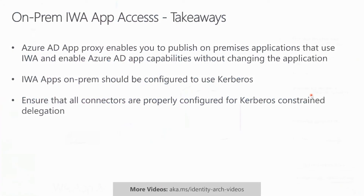So what are the key takeaways from this video? First, Azure AD App Proxy enables you to publish on-premises applications that use integrated Windows authentication and enable Azure AD capabilities such as MFA, My Apps Portal, and sign-in reports — all without changing any logic in the application itself. Second, applications on-premises should be configured to use Kerberos; that is how the connector translates cloud authentication back to on-premises. Finally, make sure that all connectors are properly configured for delegation, including permissions to all the SPNs of the published applications and optimized access to domain controllers.